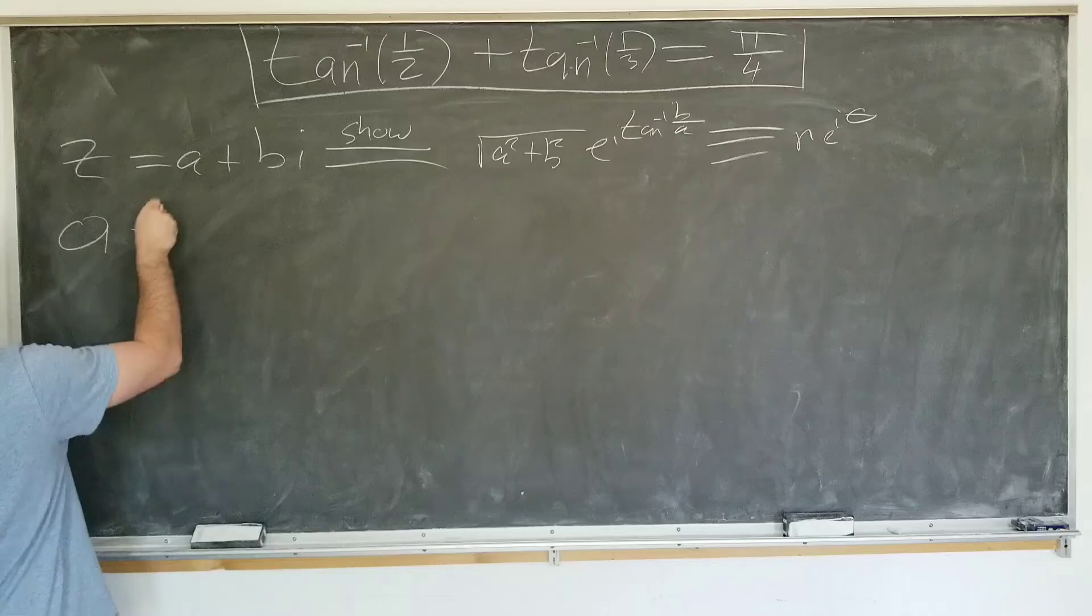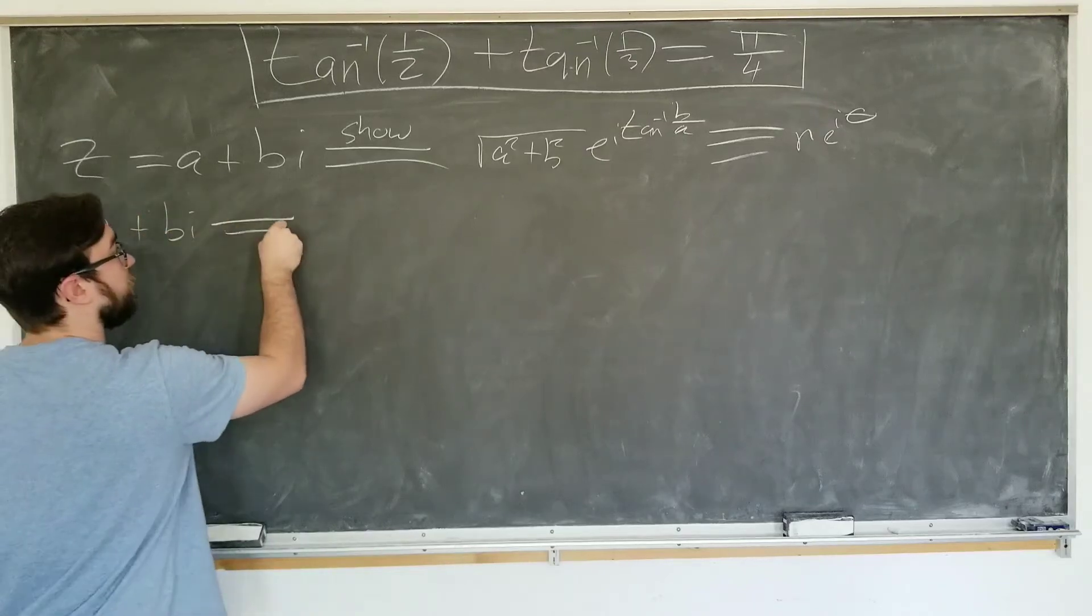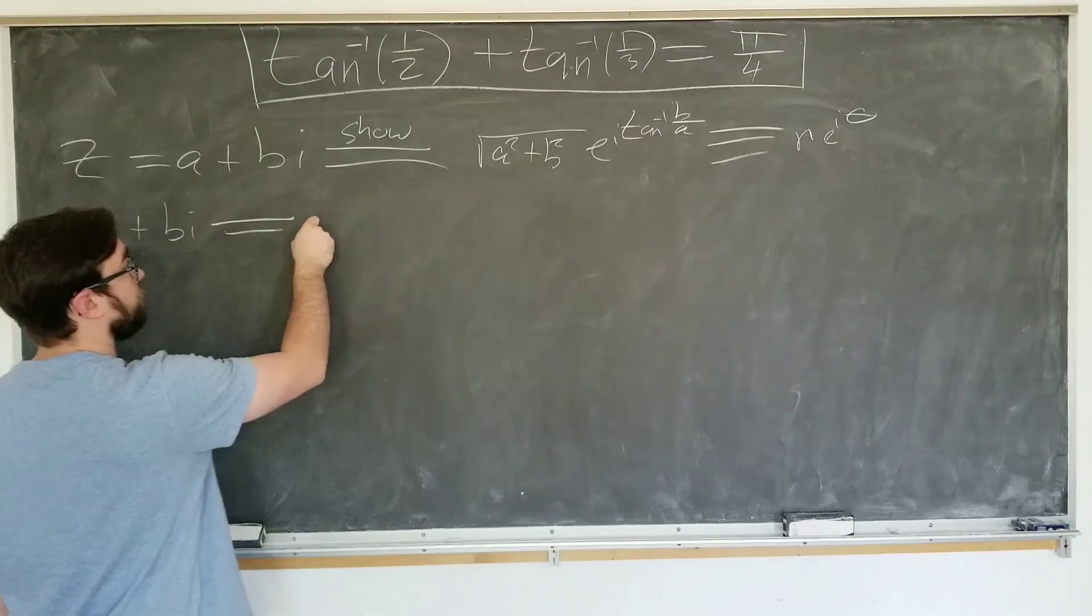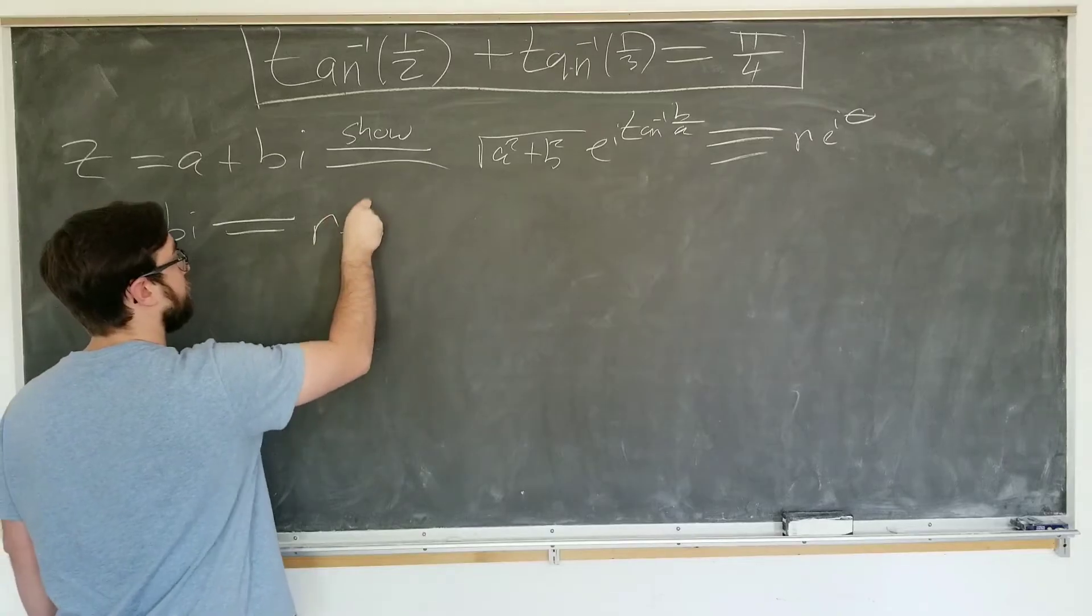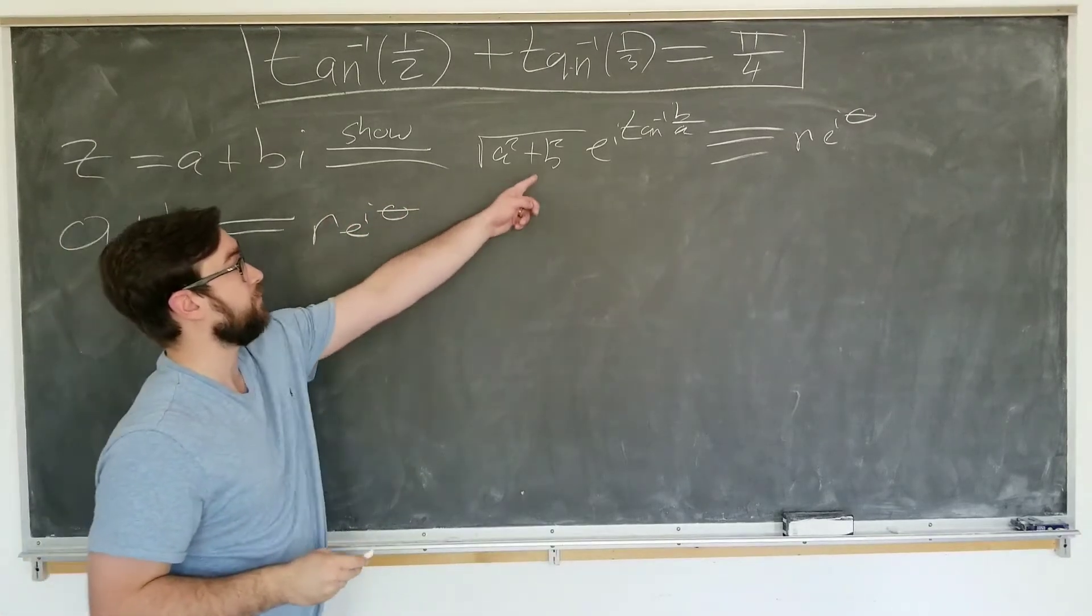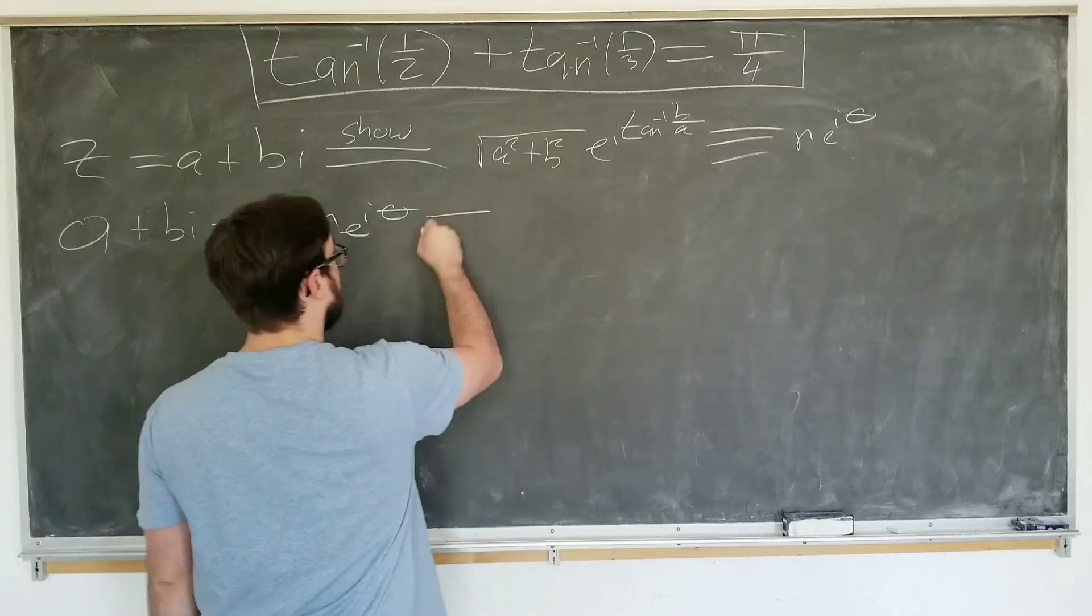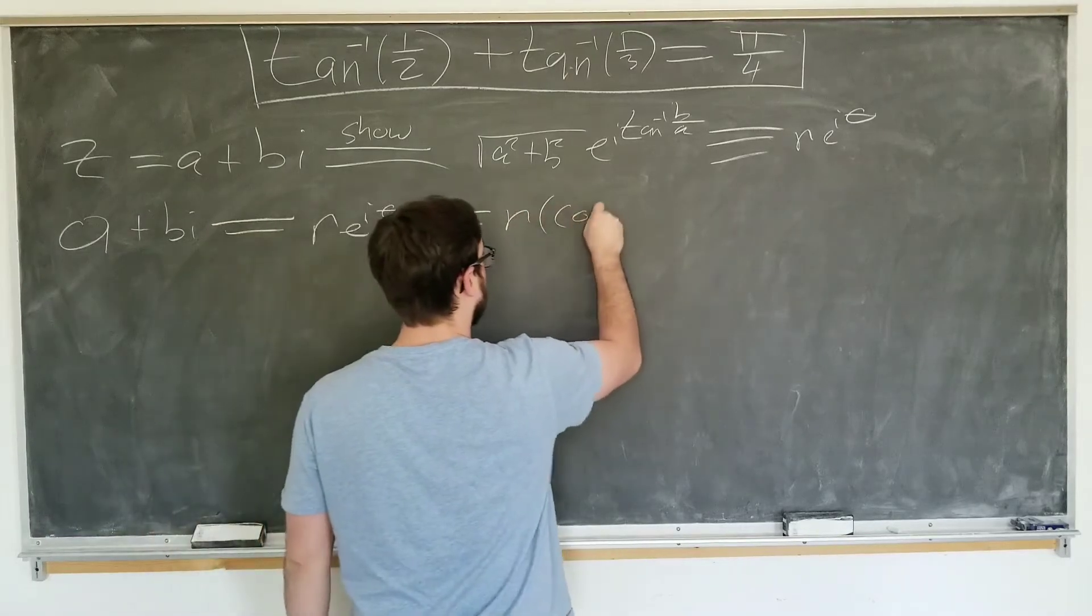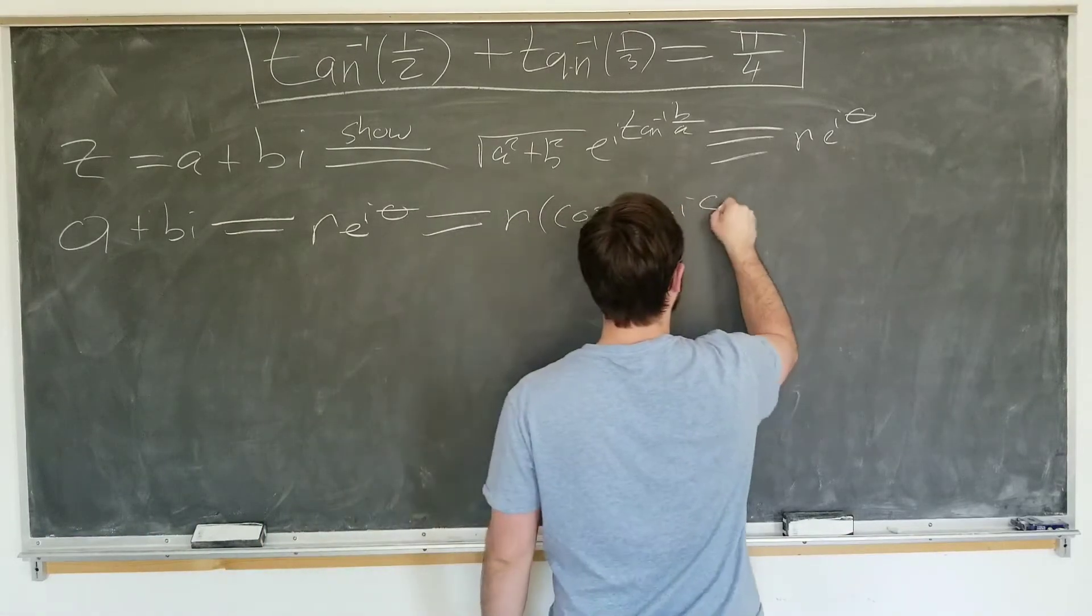So we have a plus bi equals r e to the i theta. For some r and theta, we're going to show that it's this eventually using Euler's formula: r cosine theta plus i sine theta.